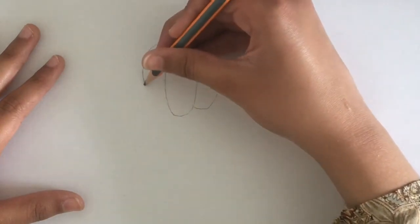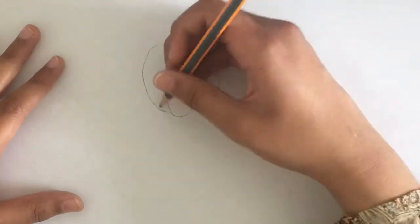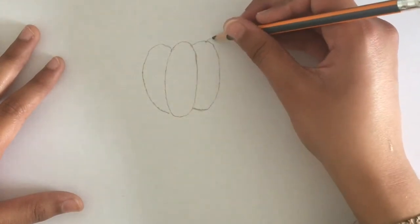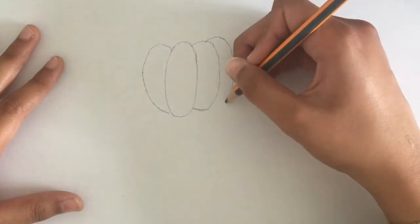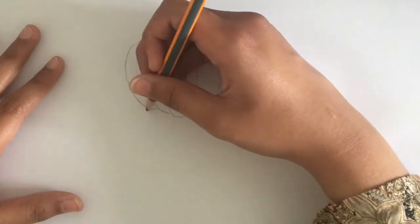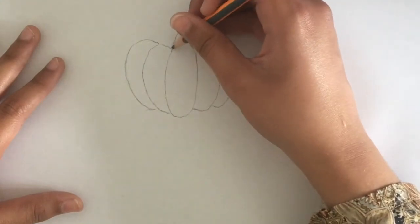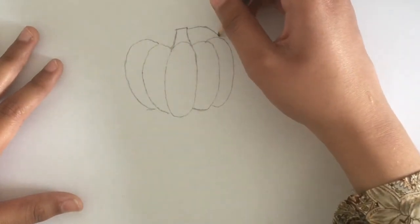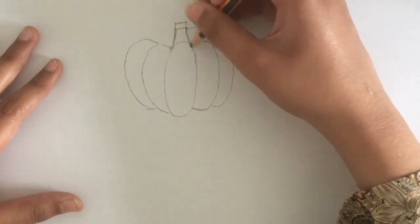Maybe you guys can comment down below if you want me to do a tutorial on how to draw a pumpkin, or you could even put this on 0.25 speed and then try to copy out how I'm drawing this pumpkin, because I sped this up.